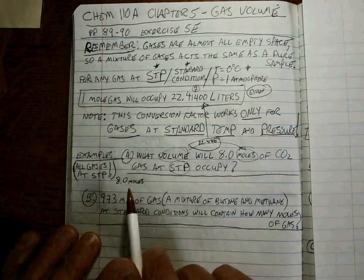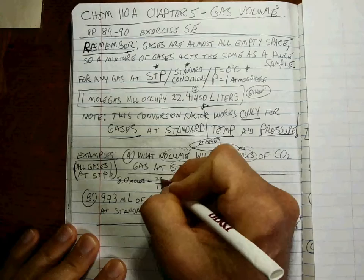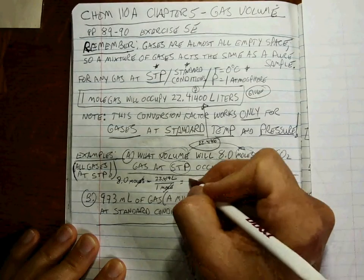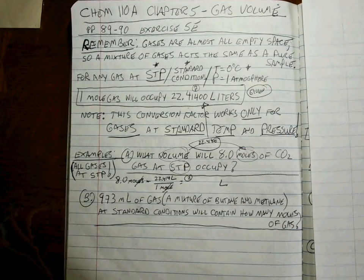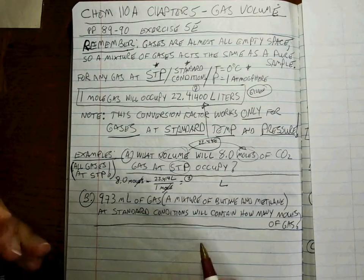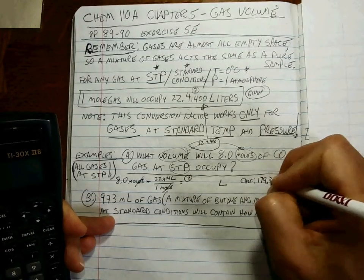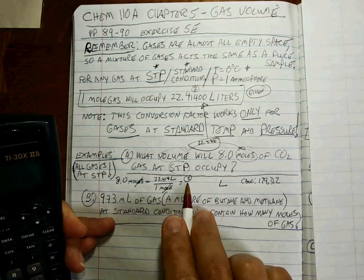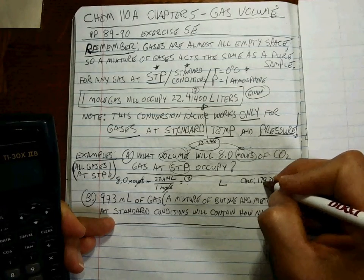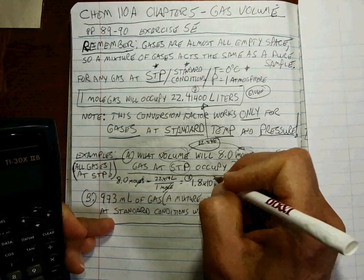We know we're at STP, so we can use that. The moles has a one associated with it, and we've got 22.414 liters. Moles cancels, we're left with liters. Two sig figs. On my calculator I get 179.312 or thereabouts. So to write this number to two sig figs, there's only one way — that's using exponential notation. It's a big number with a positive exponent, so 1.8 times 10 to the 2.